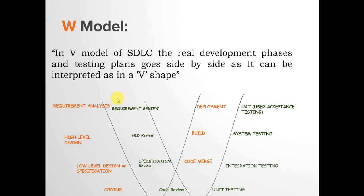In the W model, an extra V is added to the existing V. With requirement analysis, a requirement review is done to ensure no issues in gathering and analysis. With high-level designing, the HLD document is reviewed. With low-level designing, the specification document is reviewed. Once code is merged, integration testing is executed, and with the full build, system testing is done. After deployment, UAT is performed.